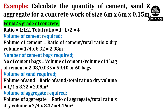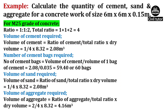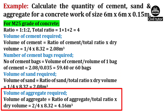Volume of sand required will be equal to ratio of sand upon total ratio, multiplied by dry volume, which will be equal to 1/4 × 8.32, giving a total of 2.08m³. Finally, the volume of aggregates required will be equal to ratio of aggregates upon total ratio, multiplied by dry volume. Ratio of aggregates for M25 is 2, total ratio is 4 and dry volume is 8.32, giving a total of 4.16m³.